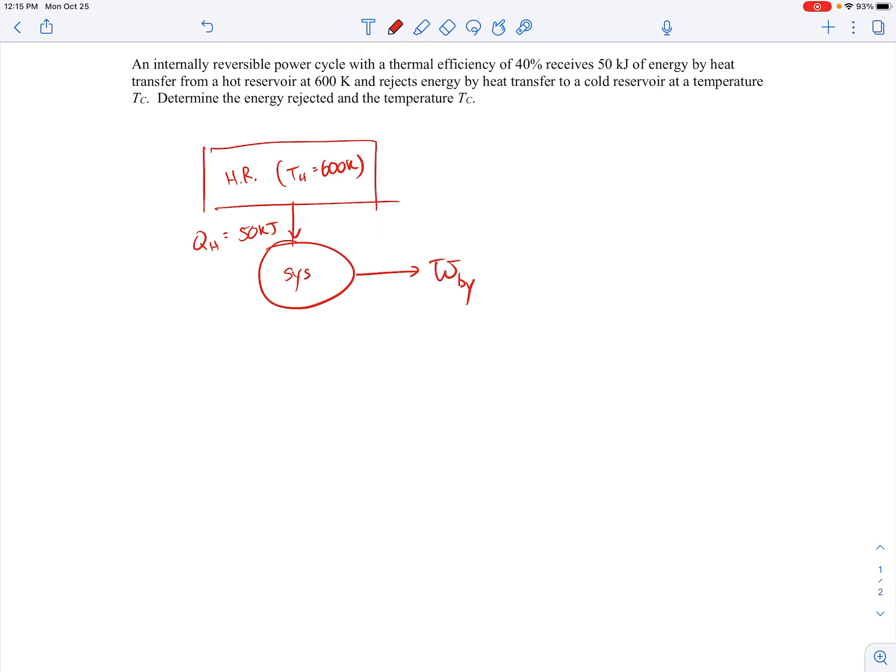This then we're told the system rejects energy by heat transfer to a cold reservoir at a temperature TC. So we're rejecting some energy to this cold reservoir. The temperature there is TC. And then the last thing is we're told that the efficiency is 40%. So we're asked to determine the energy rejected, meaning the QC, and the temperature TC.